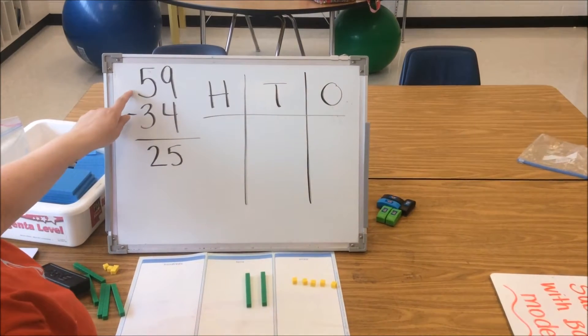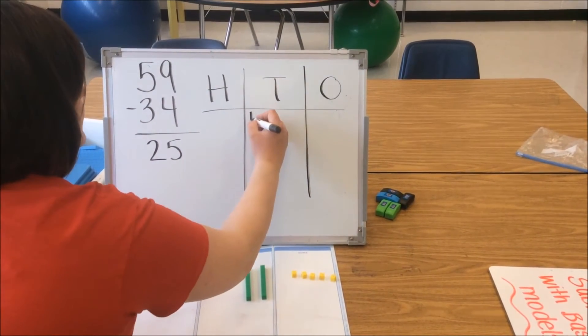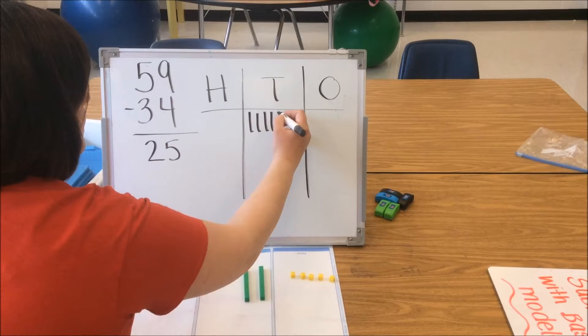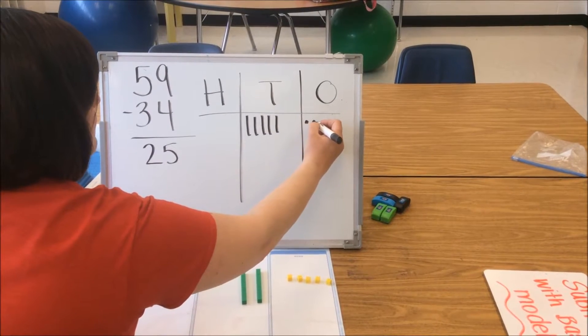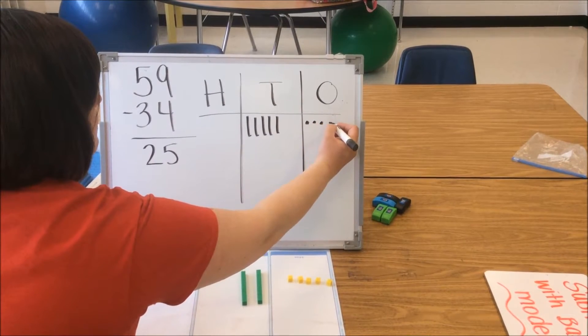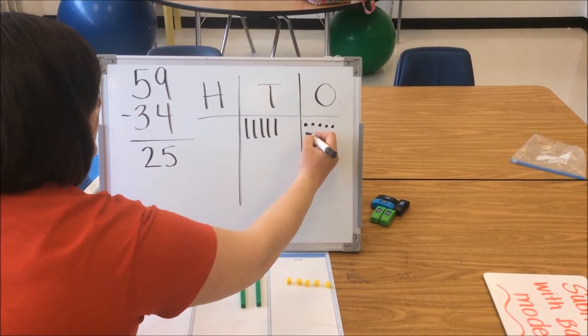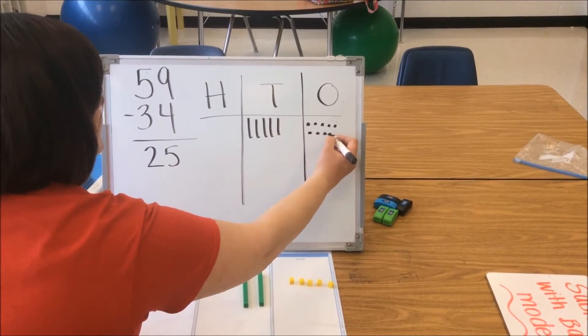We model our first number 59 on the HTO chart: 10, 20, 30, 40, 50, 51, 52, 53, 54, 55, 56, 57, 58, 59.